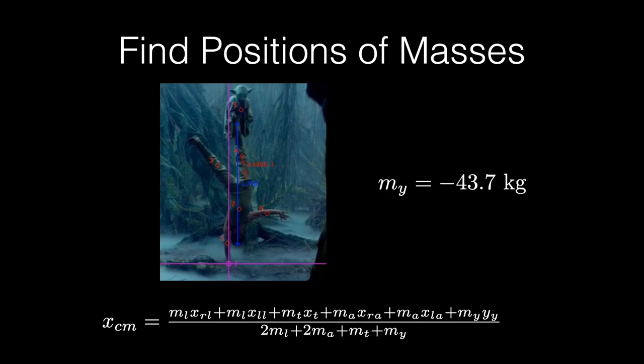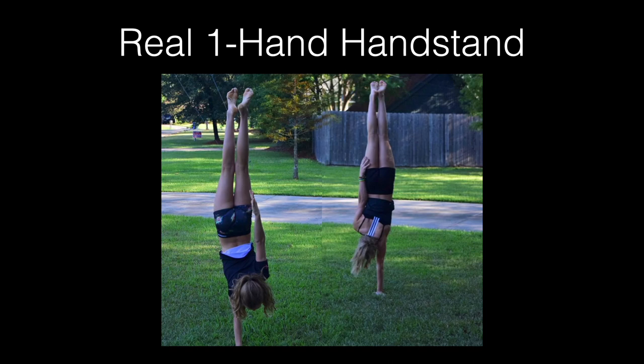You can do a one-handed handstand — these are my two daughters demonstrating it, though they can only hold it for a second. Notice they have to tilt their spine significantly to get their center of mass over their hand. You can't just hold your arm straight out — it's really hard. Some people can do it in unusual positions, but it's tough.